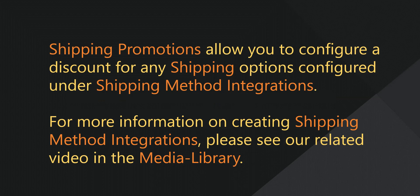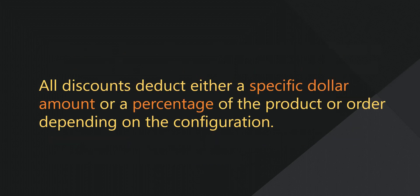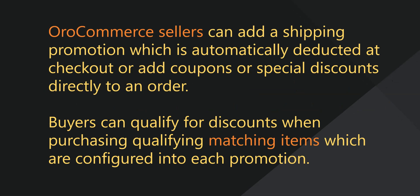Shipping promotions allow you to configure a discount for any of the shipping options configured under Shipping Method Integrations. For more information on how to create shipping method integrations, please see our related videos in the Media Library. All discounts deduct either a specific dollar amount or a percentage off the product or order, depending on the configuration. OroCommerce sellers can add a shipping discount, which is automatically deducted at checkout, or add shipping coupons or other special discounts directly to orders.